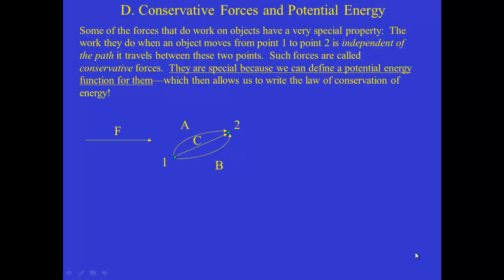As our starting point, we realize that some of the forces that do work on objects have a special property: the work that they do when an object moves from point 1 to point 2 does not depend on the path that it travels. In other words, if this force is acting on the object and it travels along path A, B, or C from 1 to 2, the work that that force does is exactly the same. Those forces are called conservative forces.